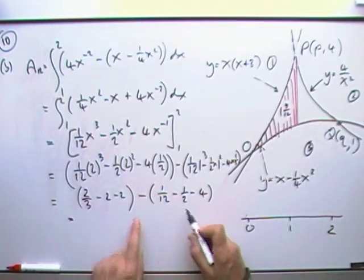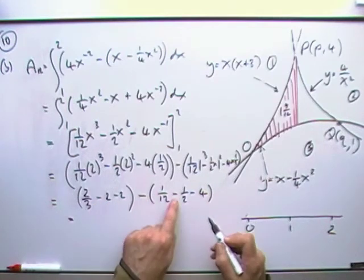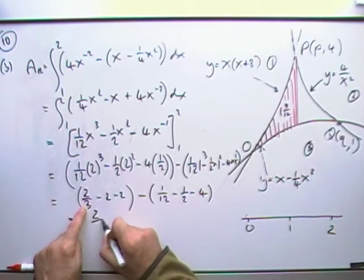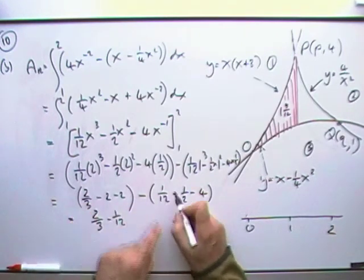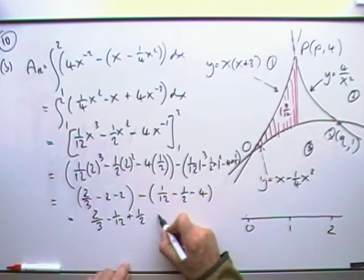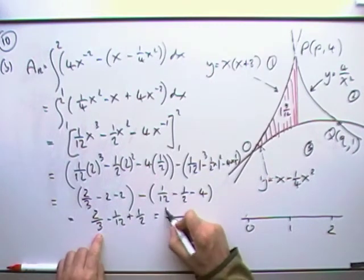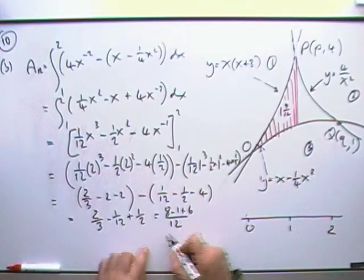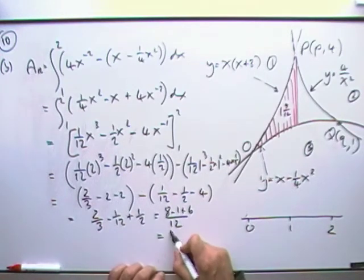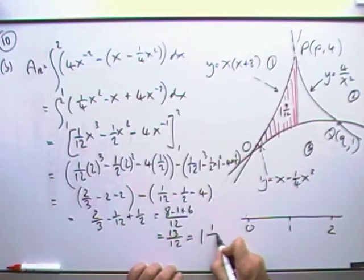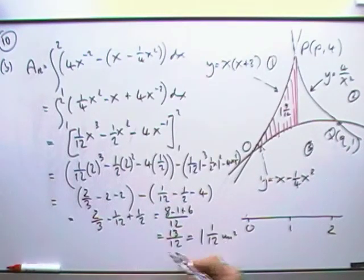Well I'll keep the whole number separately. I've got minus 4 and I've got a plus 4, so they'll cancel out. So I've just got this 2 thirds, minus that 12th, but plus a half. I'll just add that all up into 12ths. So for the 12ths I've got 8 minus 1 plus 6, so that's going to give me 7 and 6, 13 twelfths, or to make it the same as the other one, 1 and 1 twelfth square units.